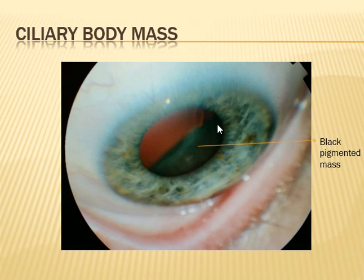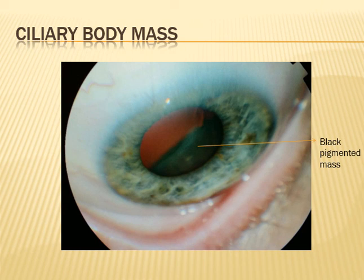Here in the pupillary area you can see some black discoloration. This is a ciliary body mass. It is not a very common finding, but it has a very high mortality if not picked up and treated — it is essentially a cancer of the ciliary body.